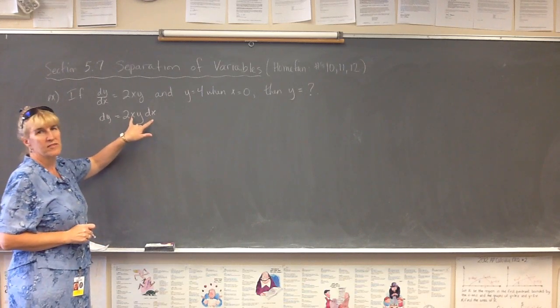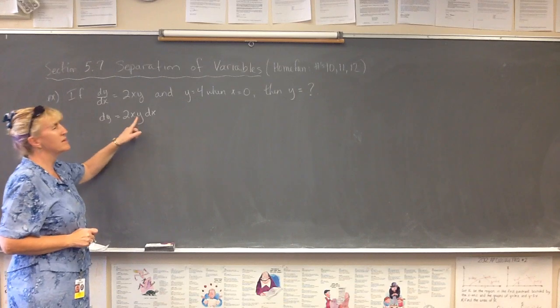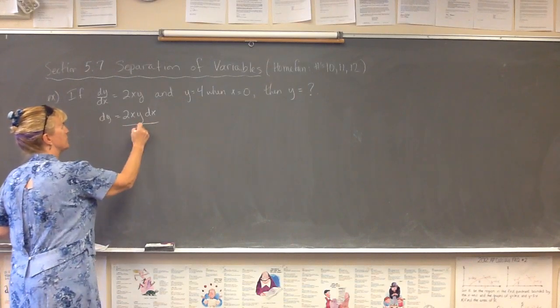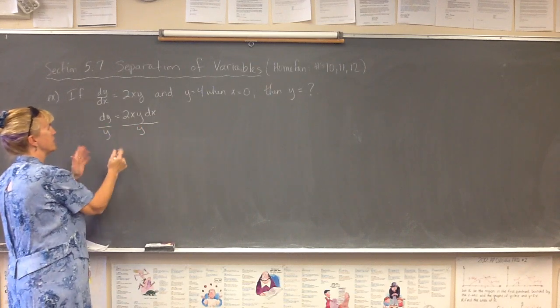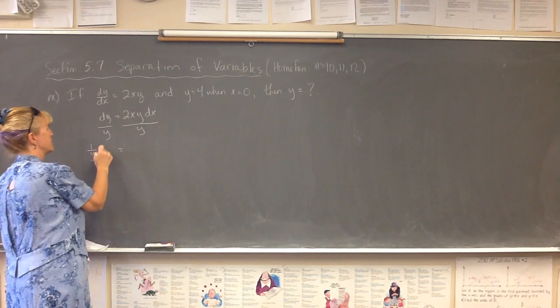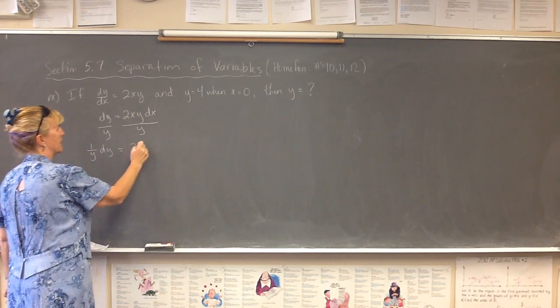Which is nice, because now I have my x just paired up over here. Problem is I still have y, so I need to get this y out of here. So I'm going to do a division on both sides of the equation by y. And then I'm going to make this nice and neat. I'm going to call this 1 over y dy is equal to 2x dx.